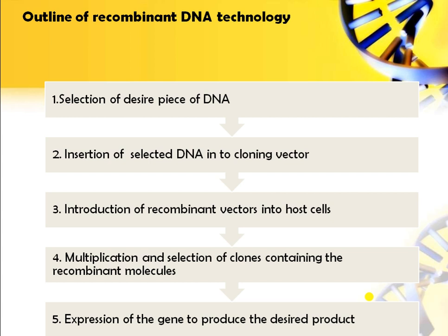The outline scheme of rDNA technology: first, selection of the desired pieces of DNA, then insertion of selected DNA into a cloning vector, introduction of the recombinant vector into the host, then multiplication and selection of clones containing the recombinant molecules, and finally expression of the gene to produce a desired product.